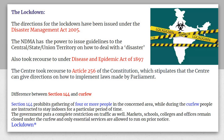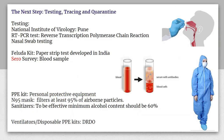Lockdown falls between Section 144 and curfew. It is not as stringent as curfew, but under lockdown, interstate movement is regulated — no one can travel freely; railways and buses are stopped. The next step after lockdown was testing, tracing, and quarantine.